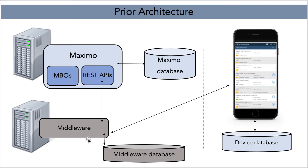The middleware component, which is Mobile First, then communicates with our mobile device — our tablet or smartphone shown on the right-hand side. When we look at this architecture, notice that there are three components: Maximo, the middleware, and the mobile device. The mobile device communicates with the middleware, which then communicates with Maximo.